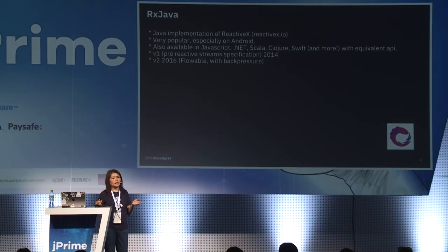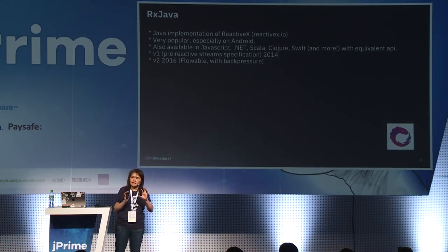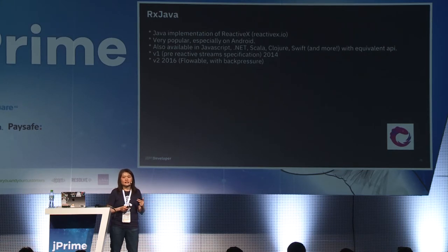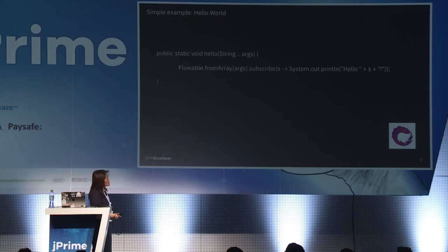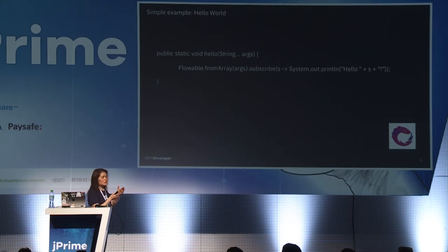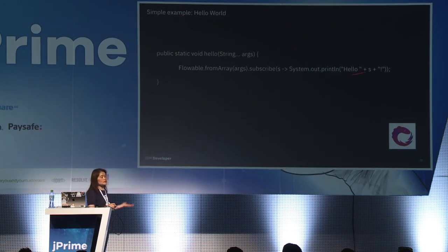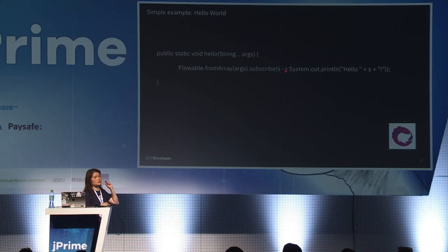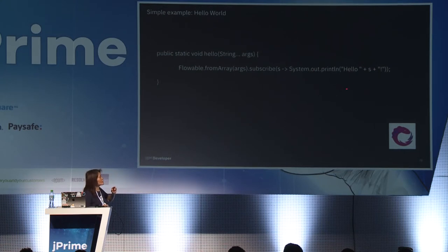RxJava and Spring Reactor engineering teams actually work together, so the two are similar in some ways. But RxJava started before Java 8, so it has its own kind of API. A Hello World in RxJava is quite simple — you use a Flowable and do .fromArray with your arguments, then subscribe. The subscriber is a consumer that does System.out.println to print out "hello" plus whatever argument you pass in. It's pretty clean using a reactive programming approach.